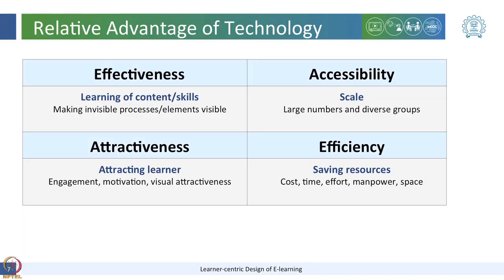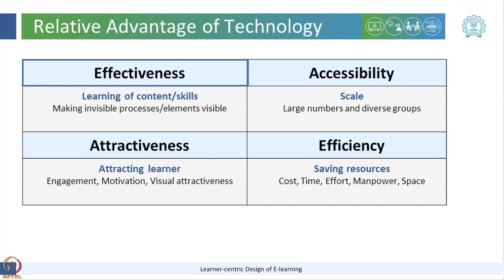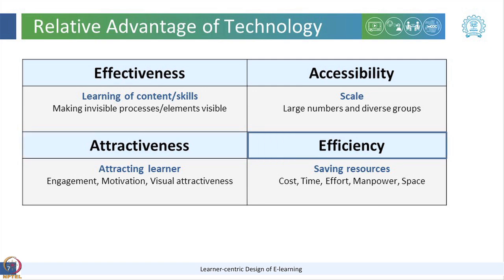There are different kinds of relative advantages of technology that may be considered. Here is a technology enhanced learning metrics which includes: effectiveness, which entails learning of content and skills; accessibility, which entails reaching large numbers and diverse groups; attractiveness, which entails attracting learners by engaging them, motivating them, and visual attractiveness; and efficiency, which entails saving of resources such as cost, time, manpower, or space.